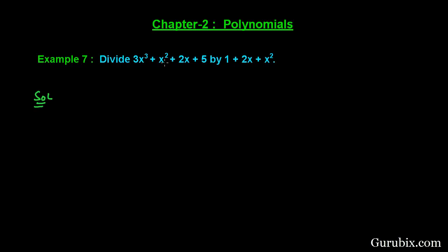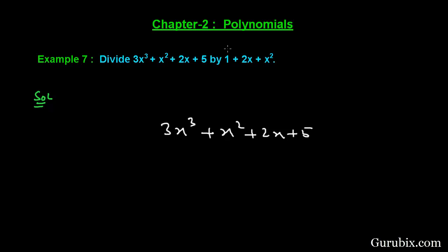First of all we shall write the dividend polynomial, which is 3x³ + x² + 2x + 5. We have to remember that we write the polynomial in its standard form — that means in descending order with respect to the power of the variable. The divisor is not in standard form, so we shall write the divisor in standard form as x² + 2x + 1.